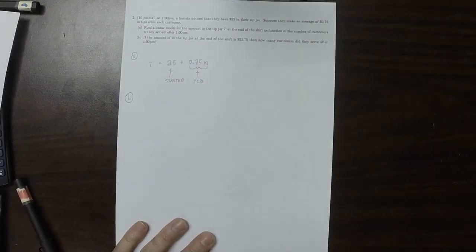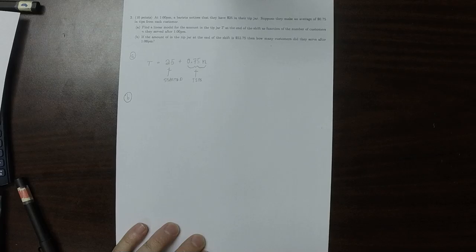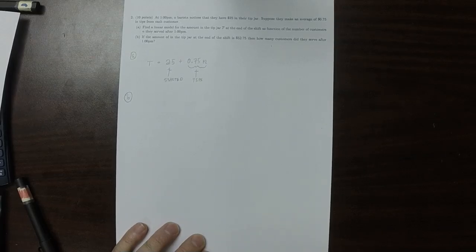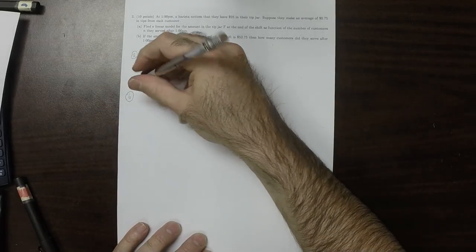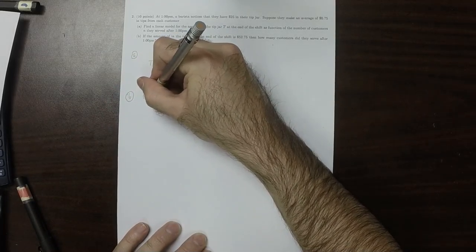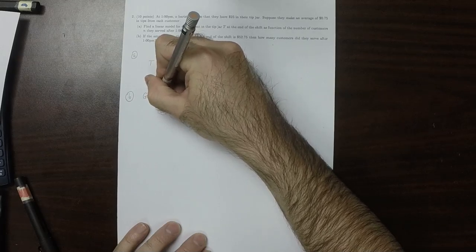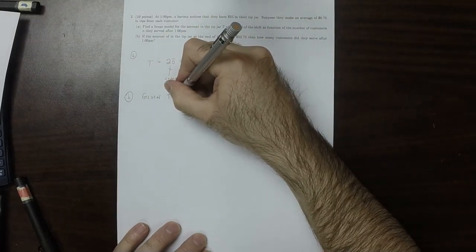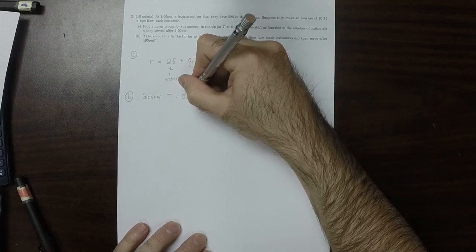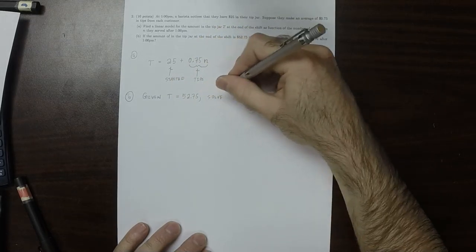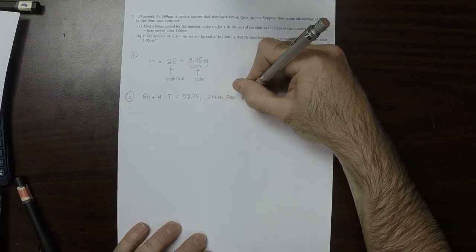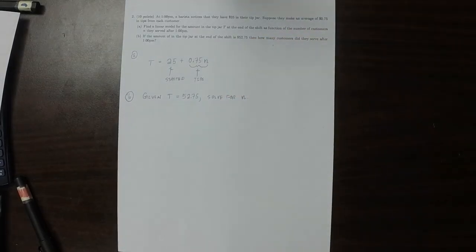So part B: If the amount in the tip jar at the end of the shift is $52.75, then how many customers did they serve? So given that T equals 52.75, solve for n.